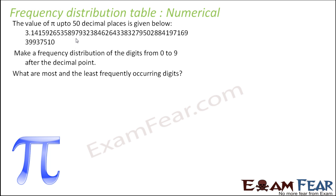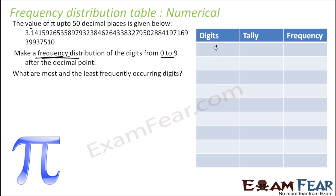The value of pi up to 50 decimal places is given. Since pi can be extended to an infinite number of decimal places, we need to make a frequency distribution table for the digits from 0 to 9. Note: it is just a frequency distribution table, not a grouped frequency distribution table — for the digits from 0 to 9 after the decimal point.